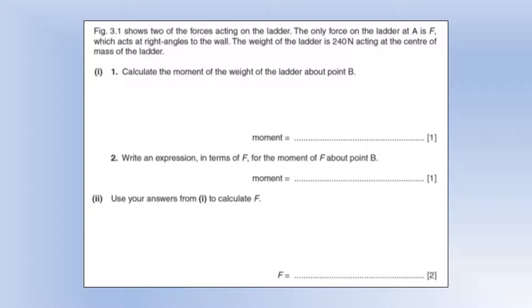The weight of the ladder is 240. Calculate the moment of the weight about point B. So to get a moment, we need the force and the perpendicular distance to point B, which is on the diagram 1.2, and that would be 290 Nm to 2 significant figures.